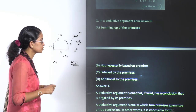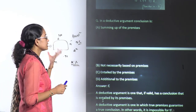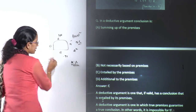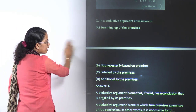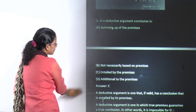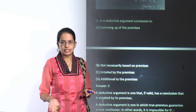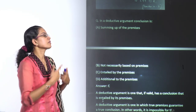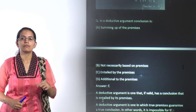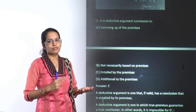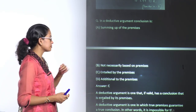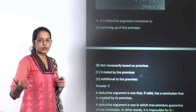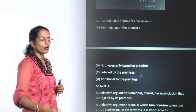The next question: in a deductive argument, the conclusion is always entailed by the premises given. A deductive argument is one with valid premises, and the validity is entailed only by those premises. Only if the premises are true can the conclusion be true. We may be covering another session with practice questions on arguments.